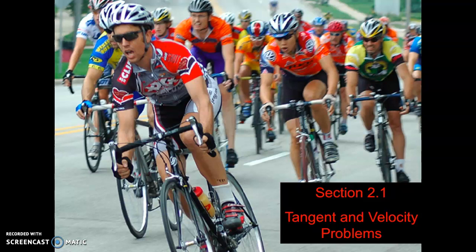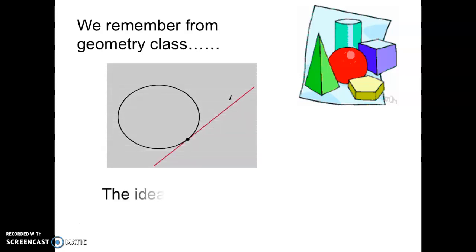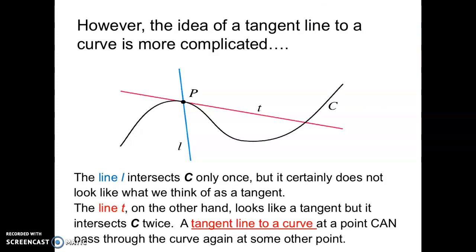Section 2.1 talks about both what a tangent line is and works with velocity problems. Remember from geometry class that the tangent to a circle is a line drawn to the outside of the circle so that the line just kisses the circumference of the circle. That was the concept of a tangent line to a circle.